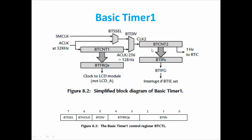For BTCNT2, there is a 2-to-1 mux from which I can select either SMCLK or ACLK. Additionally, BTCNT2 can receive a clock from BTCNT1 — specifically ACLK divided by 256. If the clock frequency is 32 kHz, that gives 128 Hz. So BTCNT2 can use ACLK or SMCLK directly, or it can receive the cascaded output from BTCNT1 at 128 Hz.